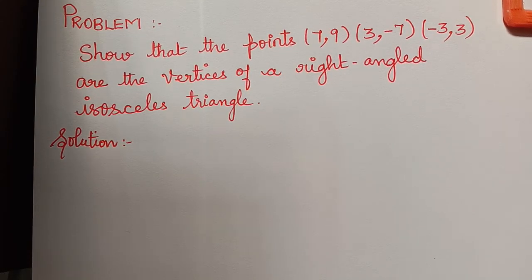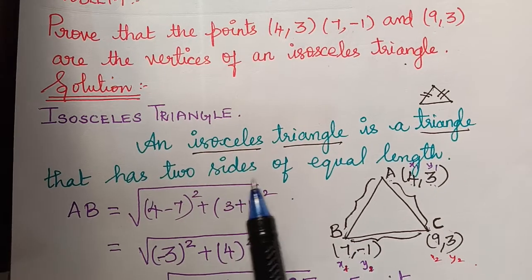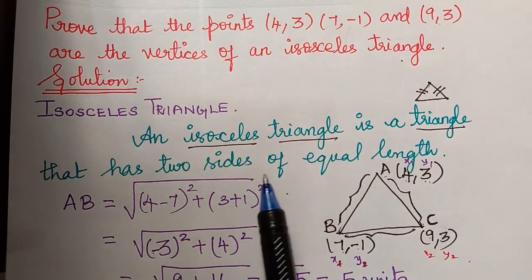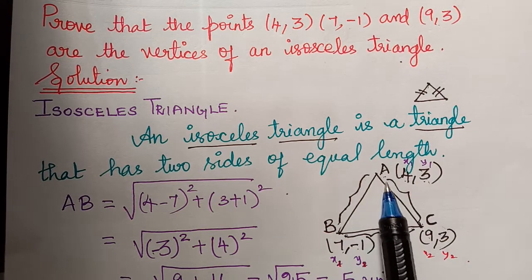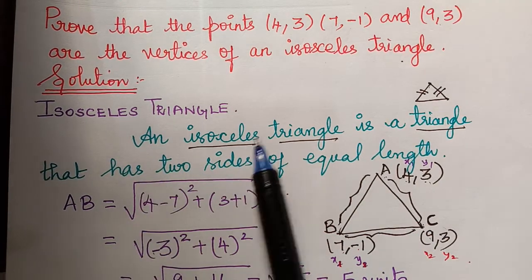In our previous videos, we learnt how to show that 3 points form an isosceles triangle, where we learnt that an isosceles triangle is a triangle that has 2 sides of equal length. So we proved that 2 of the sides are of equal length to prove that it is an isosceles triangle.